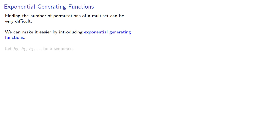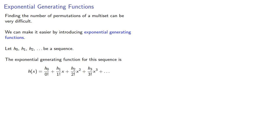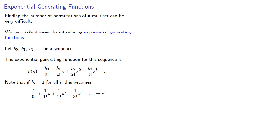Let h0, h1, h2, and so on be a sequence. The exponential generating function for this sequence is defined as a power series. Note that if h_i equals 1 for all i, this becomes the familiar series for e to the x, which is why we call them exponential generating functions.